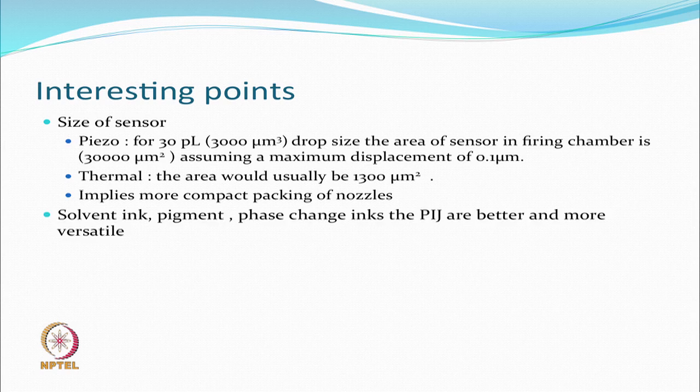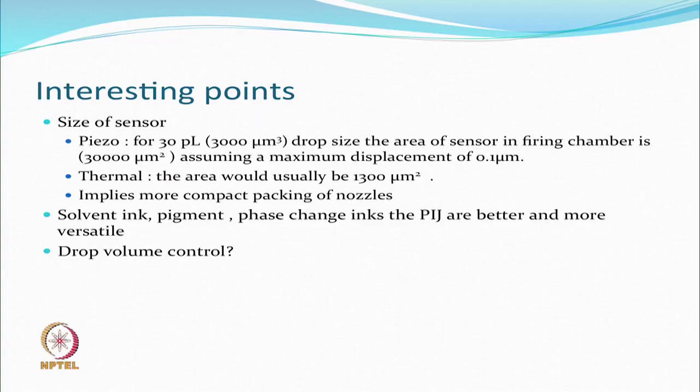For solvent inks, pigment-based inks, and phase change inks, the piezo inkjet heads are considered better and more versatile. The area of the sensor is not going to be changed every time — the area remains the same, and the only thing you can do is either fire or not fire, or control the voltage. If you can control the voltage, you can control the total displacement. Drop volume control can therefore be done relatively easily with piezo because the dimensional change is fixed based on the applied voltage.